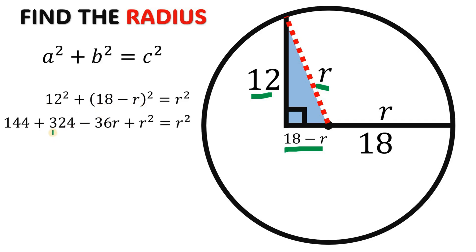18 minus r raised to the power of 2 will give us 324 minus 36r plus r squared, and then bring down r squared. Now subtract r squared on both sides. This is just zero, so our equation becomes 144 plus 324 minus 36r equals 0.